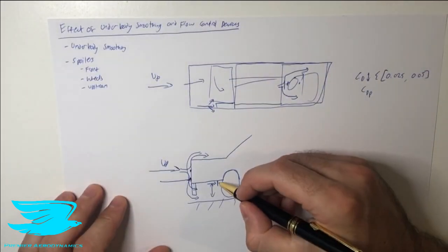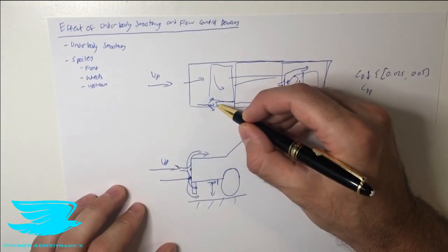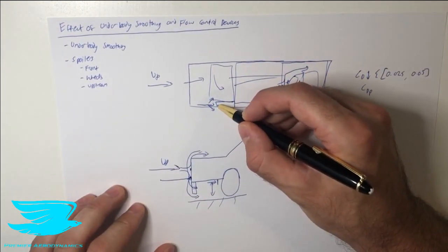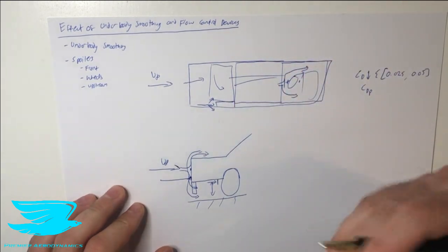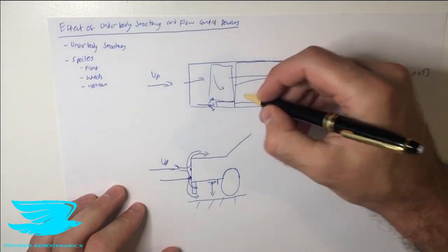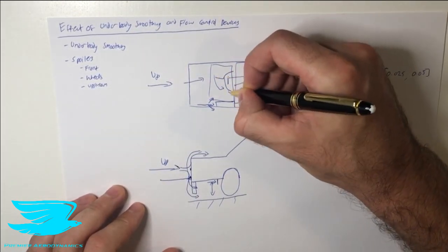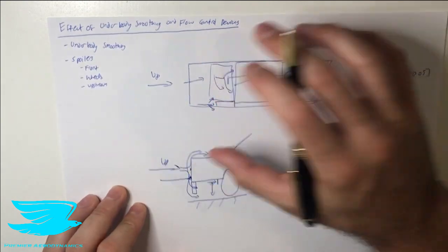Alternatively, we can have wheel spoilers, spoilers just ahead of the wheels to redirect the flow a little bit to make sure we're not hitting the wheel straight on. And finally, we have generic upstream spoilers. Wherever we have a troublesome area, we just put an upstream spoiler there, and then we can redirect the flow a little bit and kind of skip over the really bad sections and redirect the flow. So that is the effects of underbody smoothing and flow control devices.